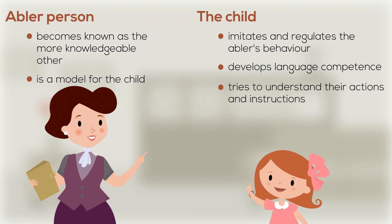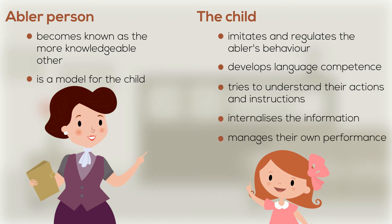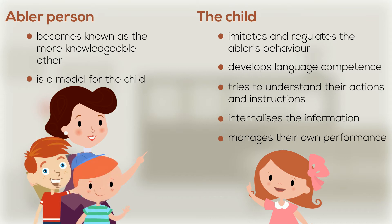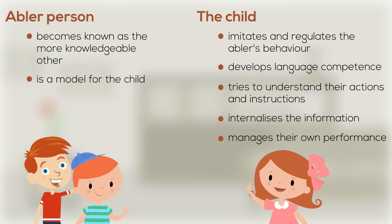The child tries to understand the actions and instructions provided by the abler person, internalize the information, and then manage their own performance. Having said this, a more knowledgeable other can also be a more capable peer and not necessarily someone older.